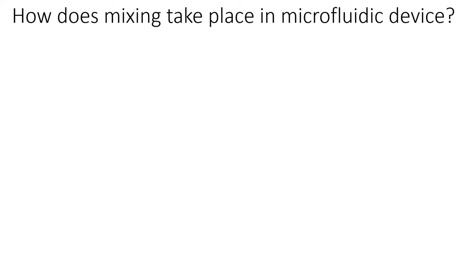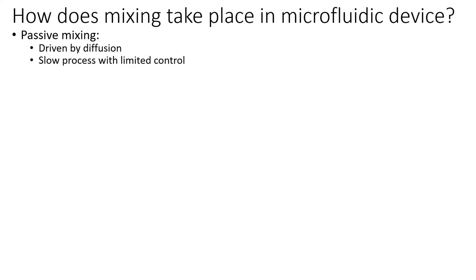The mixing examples we showed so far are at the macroscopic scale. How about mixing at the microscopic scale, such as in a microfluidic device? For passive mixing, it can still happen because there is nothing stopping diffusion from happening at a microscopic scale. However, diffusion is a slow process and we have limited control over diffusion rate. So passive mixing is not an efficient means to rely on for micro-mixing.